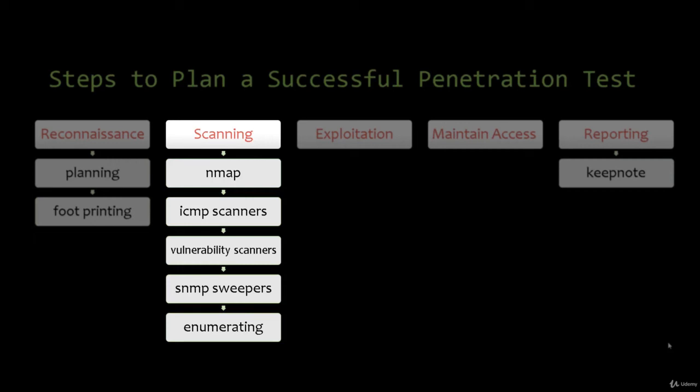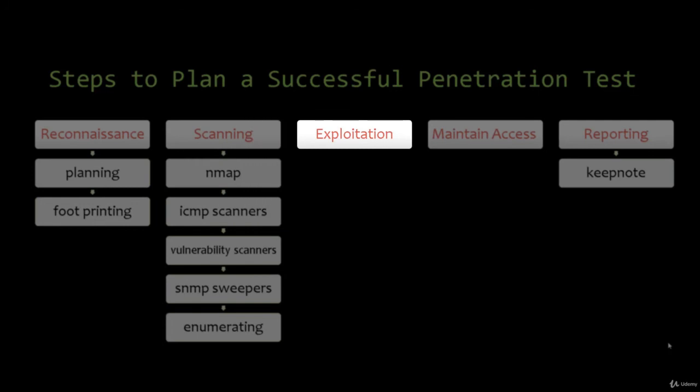The type of information sought during enumeration includes usernames, groups, network resources and shares, and applications. Tools used in this phase include Active Directory lookups to uncover vulnerabilities in users and groups, discovering NetBIOS names with NBTScan, using SNMPUtil for SNMP, and employing Windows DNS queries along with establishing null sessions and connections.